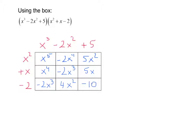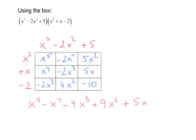All I have to do now is list my terms and combine like terms. x to the 5th is by itself. Looking at the diagonals: x to the 4th and negative 2x to the 4th combine, and negative 2x cubed and negative 2x cubed are like terms. Then 4x squared and 5x squared combine. So the answer is x to the 5th minus x to the 4th minus 4x to the 3rd plus 9x squared plus 5x minus 10.